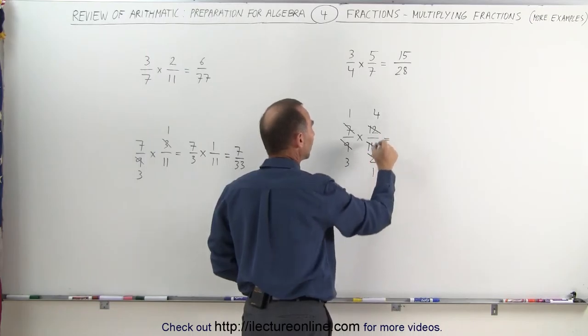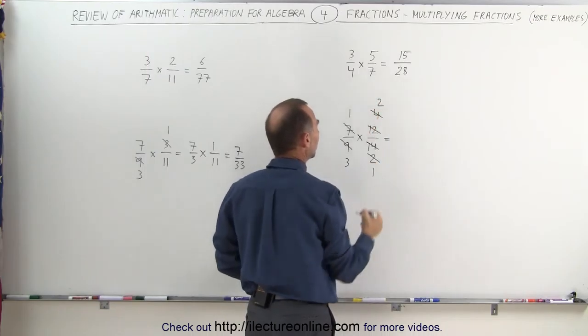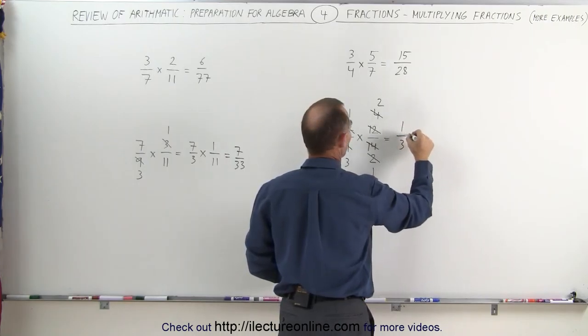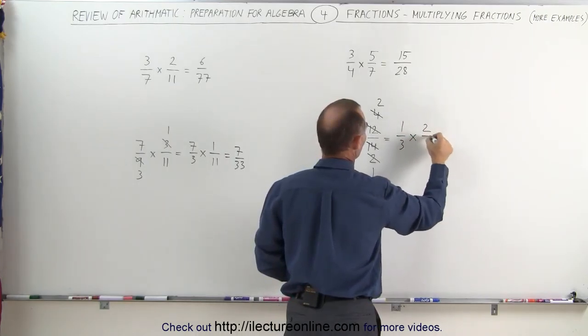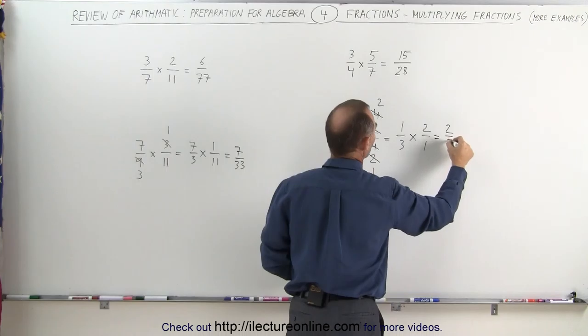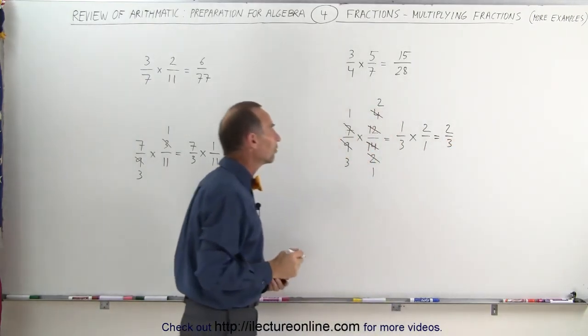2 divided by 2 is 1, 4 divided by 2 is 2, and I'm left with 1 third multiplied times 2 over 1, which is 2 thirds, and that is the final answer.